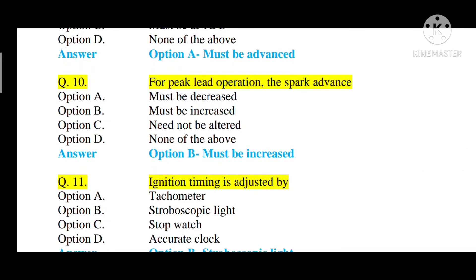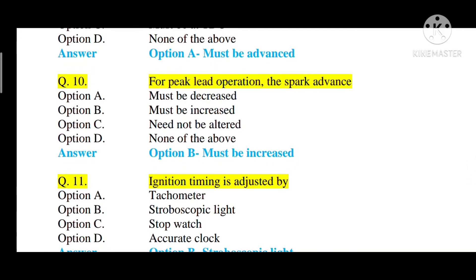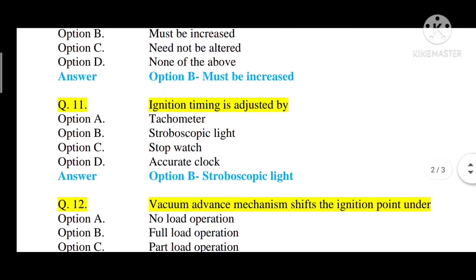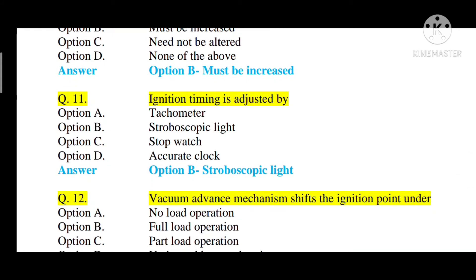Question number ten: for peak load operation, the spark advance — option A: must be decreased, option B: must be increased, option C: need not be altered, option D: none of the above. The correct answer is option B — must be increased. For peak load operation, the spark advance must be increased because as speed increases, spark advance must increase.